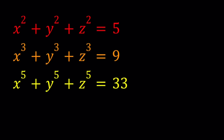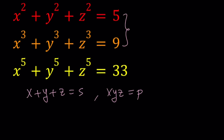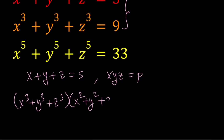Now let's go ahead and set some variables for the sum and the product. We're going to start solving this system. Let me set x plus y plus z as s and the product xyz as p. I'm going to start by multiplying these two equations, because that's going to give me some information about the sum of fifth powers. So I'm going to go ahead and multiply x cubed plus y cubed plus z cubed by x squared plus y squared plus z squared.